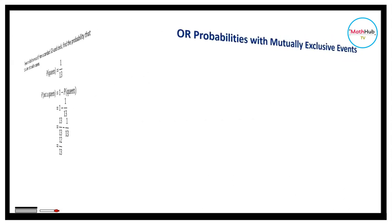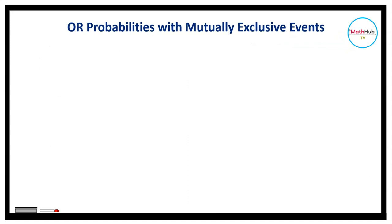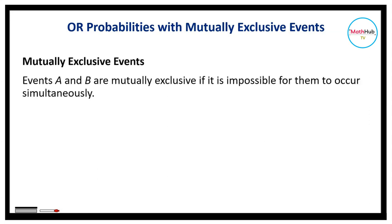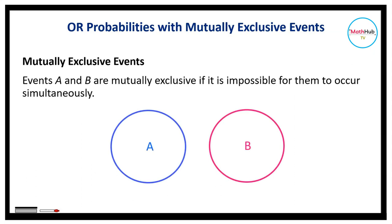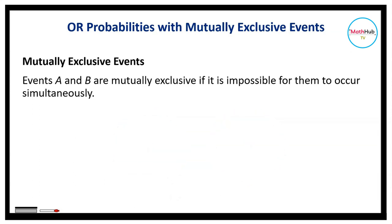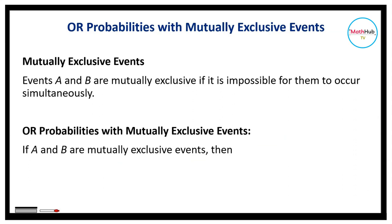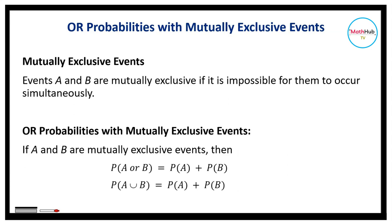Let's discuss the probability of either of two mutually exclusive events occurring. In probability theory, two events are said to be mutually exclusive if they cannot occur at the same time or simultaneously — in other words, they are disjoint events. That means the probability of both events occurring at the same time will be 0. So if A and B are mutually exclusive events, the probability of A or B occurring can be computed by adding the probability of A and the probability of B: P(A or B) = P(A) + P(B).